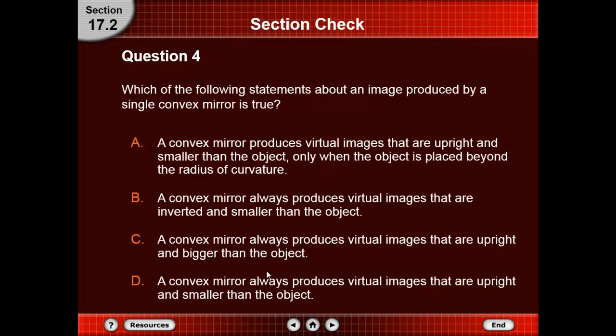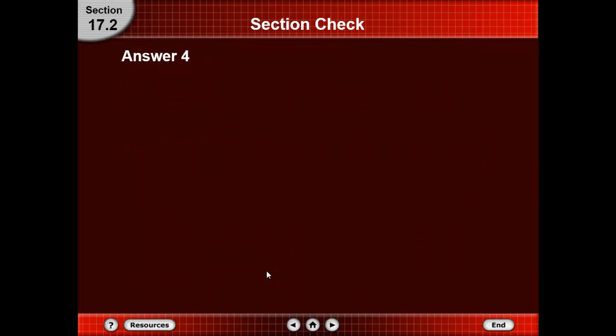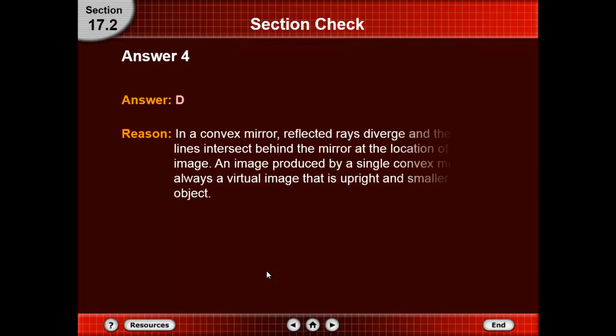The answer is D. Because in a convex mirror, reflected rays diverge and the sight lines intersect behind the mirror at the location of the image. An image produced by a single convex mirror is always a virtual image that is upright and smaller than the object. Thank you.